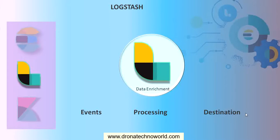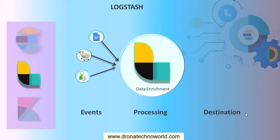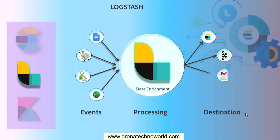Whatever data is received by Logstash is handled as events, which can be anything — log file entries, e-commerce orders, customer information, or chat messages. We can also use web traffic as data for Logstash. These events are processed by Logstash and then transferred to one or more destinations such as Elasticsearch, Kafka, email, or any other HTTP endpoint. Logstash contains three steps: input, filter, and output.